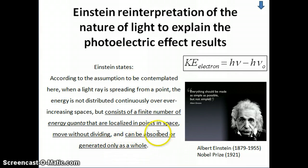And can be absorbed or generated only as a whole. This is important, meaning that when the photon hits an electron, the energy of the photon can either be taken in, all of it, or none of it. You can't take half of that energy or two-thirds of that energy. You either take the whole energy of the photon or you take zero. So that's the way he modeled light in the context of the photoelectric effect.